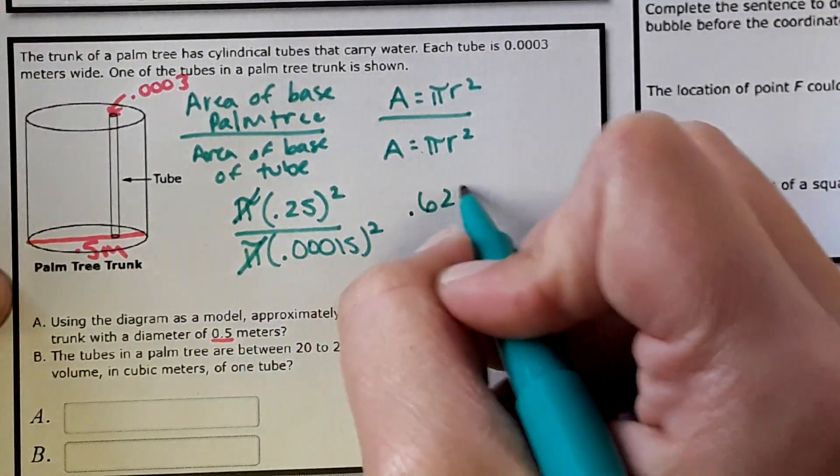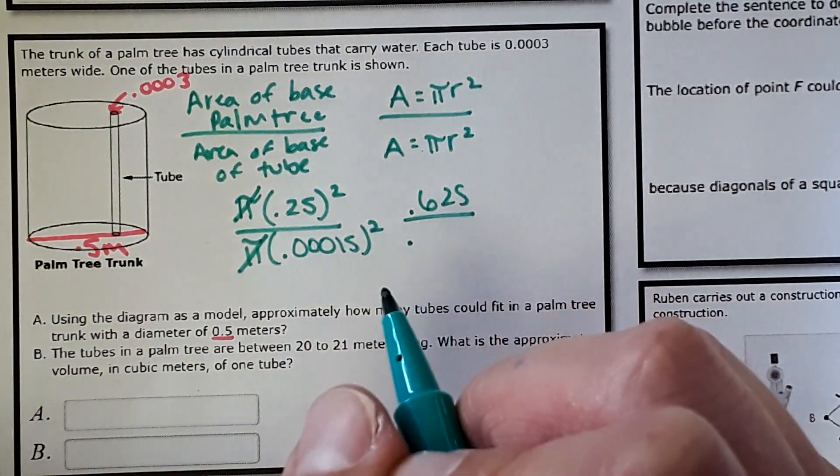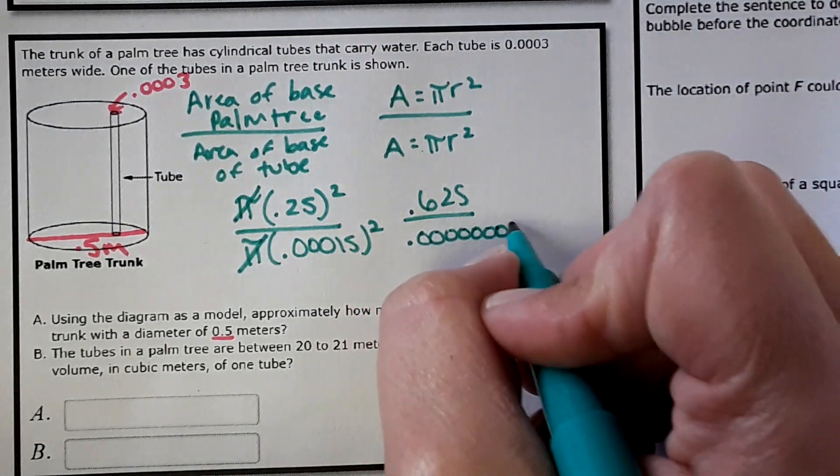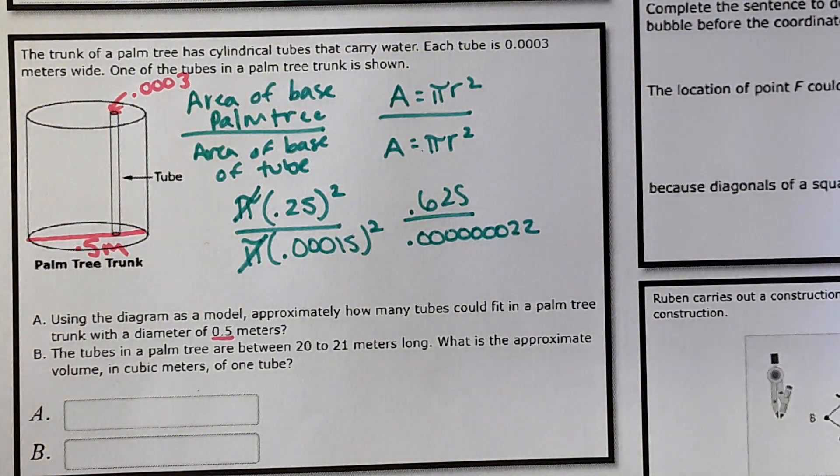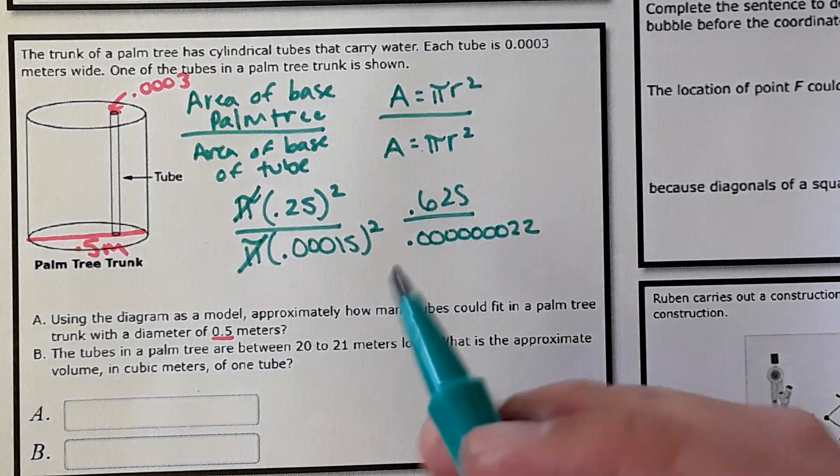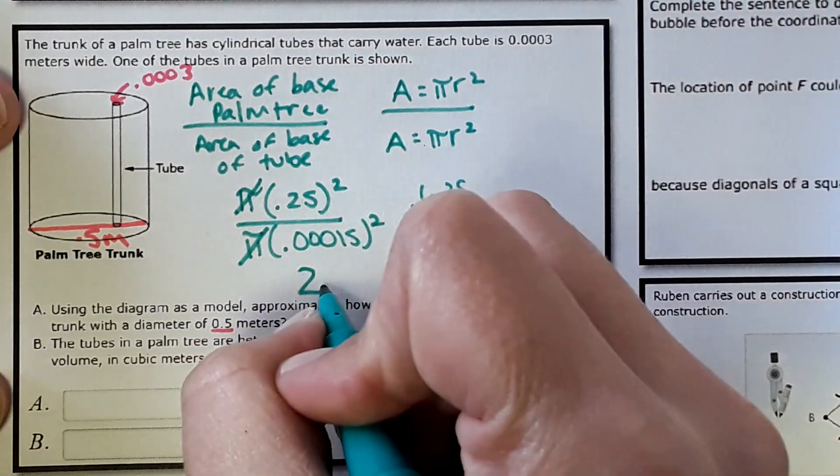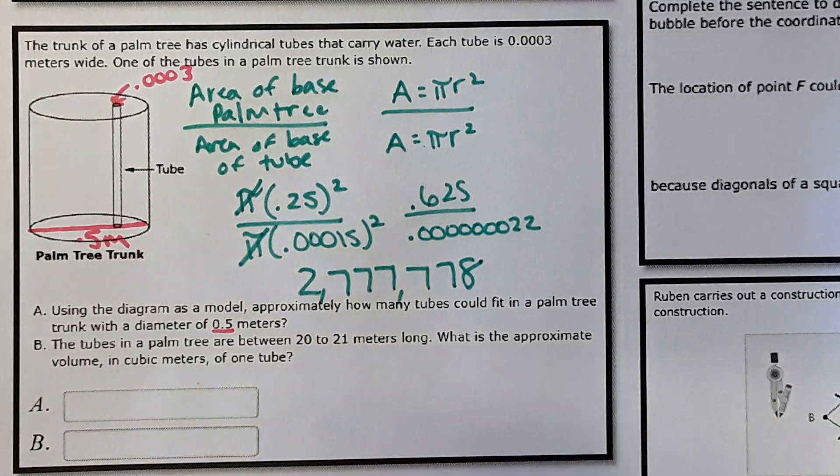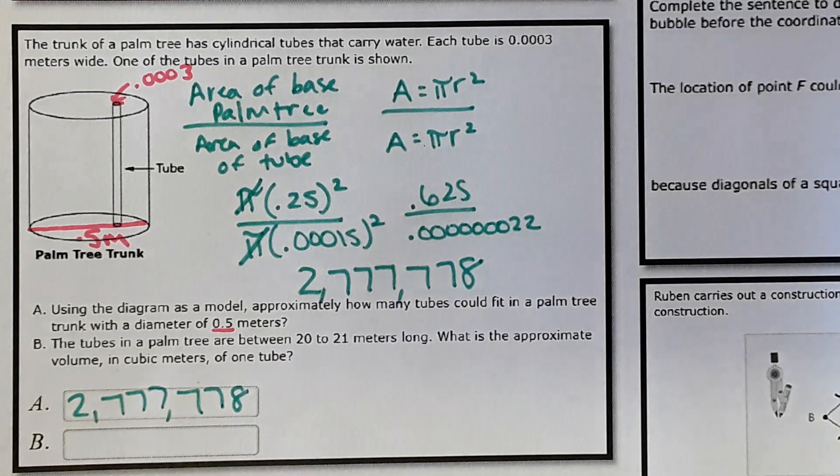This squared would be 0.625. This squared comes out to 0.0000000225. That's a cool number. And then divide that out. And it tells you how many of these little tubes fit in the trunk of the tree trunk. And that comes out to this number. So 2,777,778 little tubes could fit in the tree trunk.